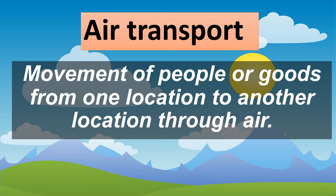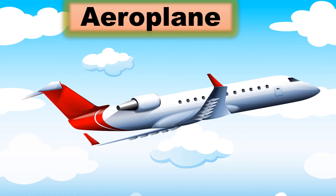Air Transport. Air transport is the movement of people or goods from one location to another location through air. It allows us to travel long distances within a very short time. First is aeroplane. An aeroplane allows transfer of lots of people and goods to far off places within hours. It is used to travel from one city to another or from one country to another. It is the fastest means of transport but it is very expensive too.